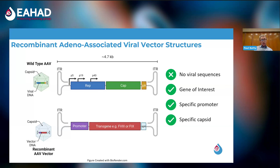When we modify this in the laboratory for gene therapy delivery, all major viral elements are removed — both the REP and CAP regions. In their place, we insert the gene we would like to deliver, under the control of a promoter region, which allows more targeted expression of the gene within a cell of interest. The areas maintained from the original virus are the inverted terminal repeats, which remain at the ends of the vector construct. In summary, the vector contains no significant viral sequences, only a gene of interest, with specific mechanisms for targeting both within the capsid coating and the promoter used.